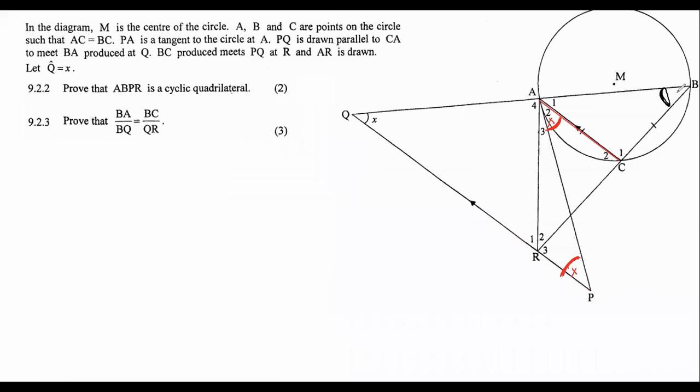Okay, I'm just going to go put all those x's in. X, x. There we go. Okay, so the next question now says prove that ABPR. A, B, P, R. So let's go find A, B, P, R. Okay, so there is the cyclic quadrilateral that they want us to prove. A, B, P, R.